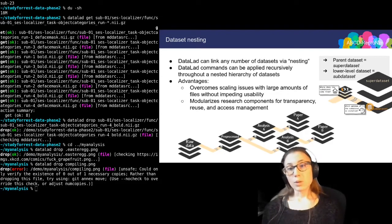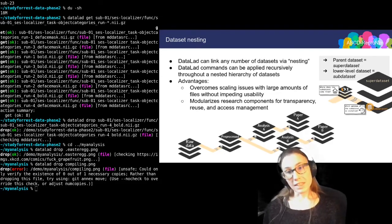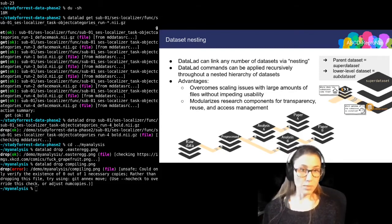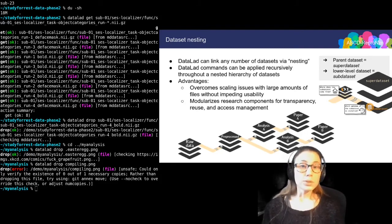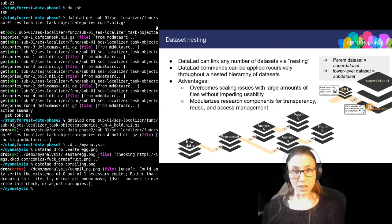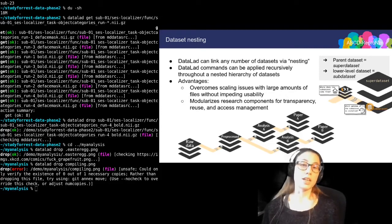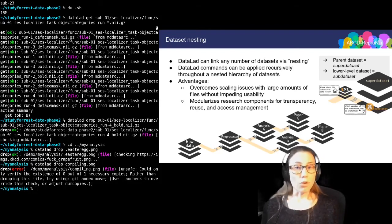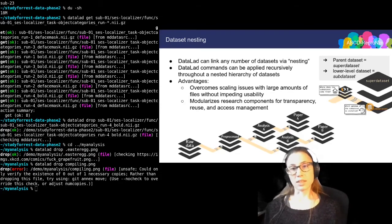For example, the processed data can become an input to several analyses, not only to one. And when you share your paper or analysis with others, they can retrace every step that has been done in this hierarchy and also build upon them. With these modules, you can also make sure that only, let's say, anonymized data is shared — only modules that you actually want to be shared. You can, for example, keep the raw data completely private by just restricting access to that dataset.